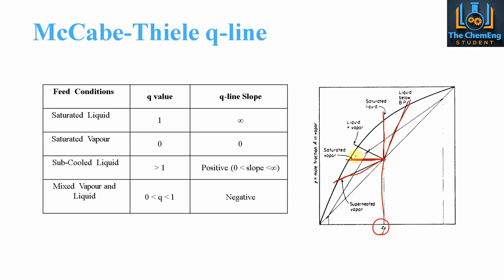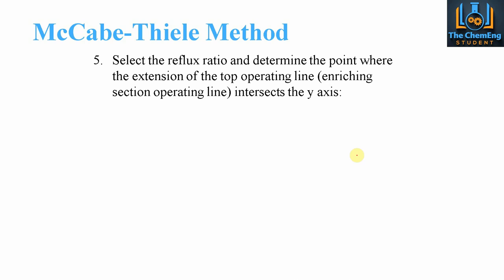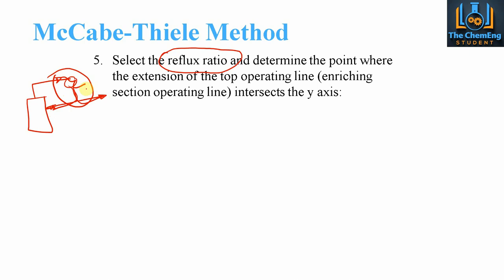We then set the reflux ratio and determine the point where the extension of the top operating line — the enriching section — intersects the y-axis. Reflux ratio is very important for regulating the efficiency and output of a distillation column. The reflux ratio at the top of the column represents the amount of material that returns into the system rather than leaving as the top product, and changing this affects the column's operating conditions and output.